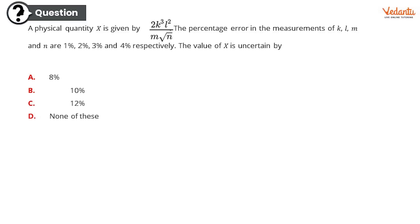The value of X is uncertain by: Option A: 8%. Option B: 10%. Option C: 12%. Or option D: none of these. Now trust me when I say this, 'none of these' is one of my favorite answers. Sometimes when I don't know the answer I just go ahead and hit 'none of these', but here let me give you a hint: the answer is not none of these.